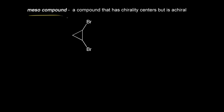A mesocompound is a compound that has chirality centers but is achiral. We're going to come back to this definition in a few minutes. Right now, let's focus on this drawing, and our goal is to draw all possible stereoisomers for this dot structure.